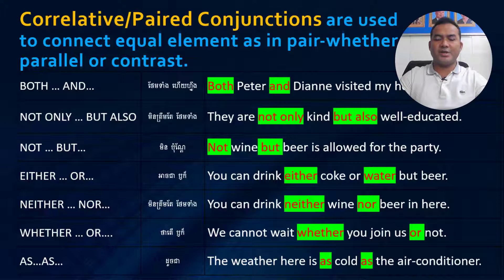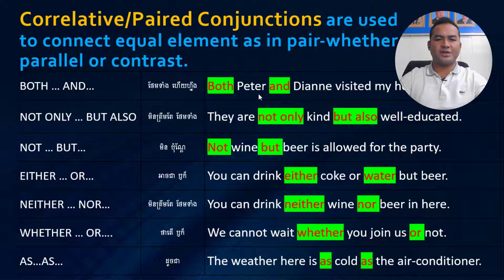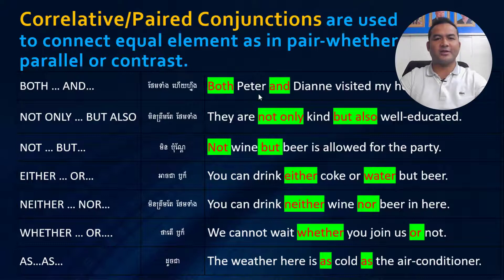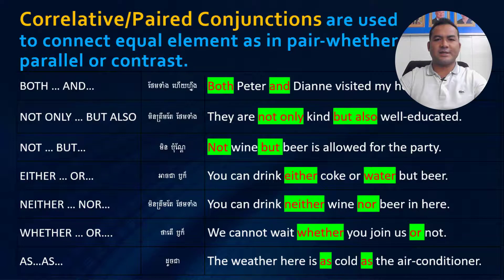With 'as/as': 'The weather here is as cold as the air conditioner.' So here is how we use the correlative conjunction — to connect equal elements that are similar or in contrast. If you have any questions, please comment and I will reply. Thank you very much for watching this lesson.